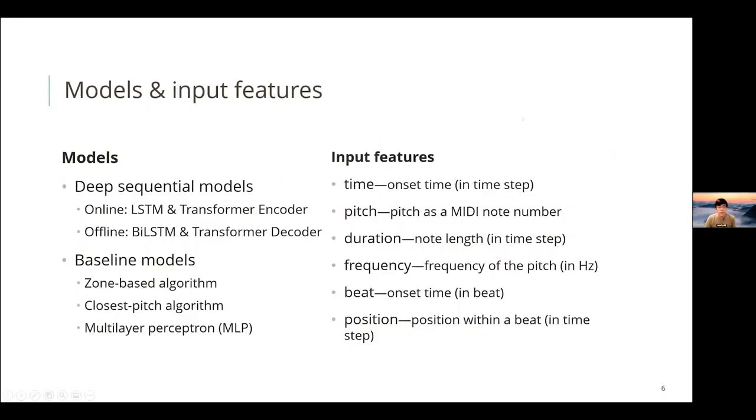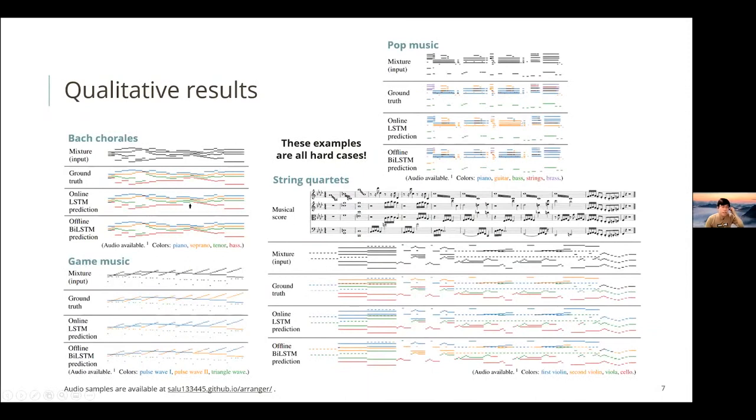Here are the qualitative results of the model. I won't go into details because it's hard to figure out what's going on at first glance. Basically, the model is doing a great job. The cases I've shown here are all hard cases where you can see the model is making errors because it's actually hard for the models when either there are overlapping pitch ranges among different instruments or you have very weird shapes of music that's going on.